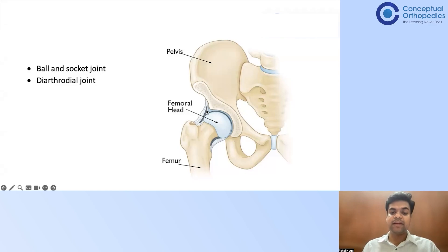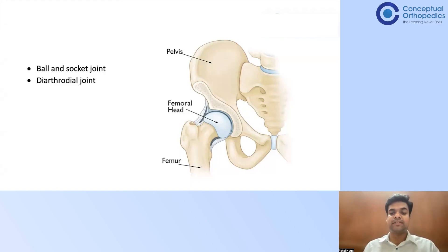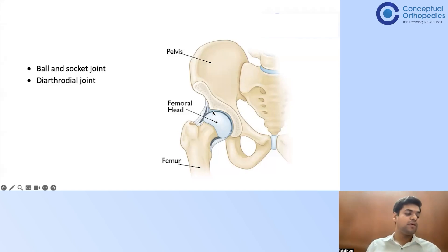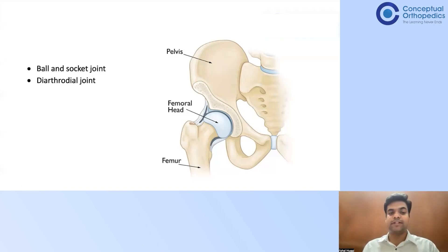There is a formation of a cavity when it is completely covered — covered by the capsule. So any two articulating surfaces which are covered by cartilage and closed by the capsule, which is lined internally by the synovial membrane — those types of joints are called diarthrodial joints. Remember, it is a plain ball and socket joint.